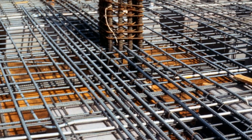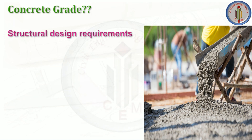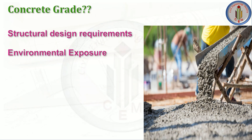Let's begin with concrete grade. On what basis do we select the concrete grade? The first criterion is structural design requirement — this is very important. According to the load coming on the structure, the concrete must be capable of carrying that load. So we select the concrete grade based on structural design requirements. The next criterion is environmental exposure, which is explained in IS 456:2000.